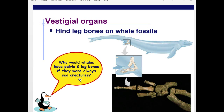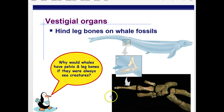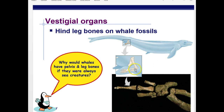The hind leg bones on whales are particularly interesting — a mammal that ended up living in the ocean where mutations took away those hind leg bones over time.